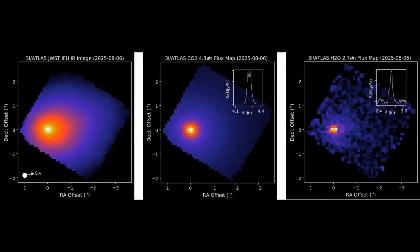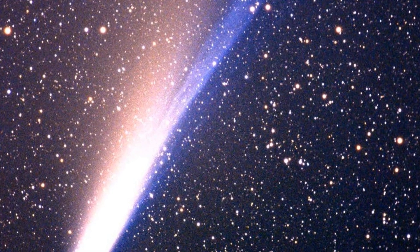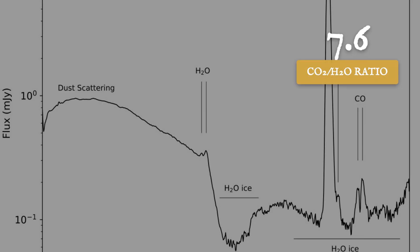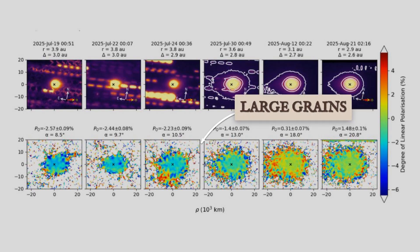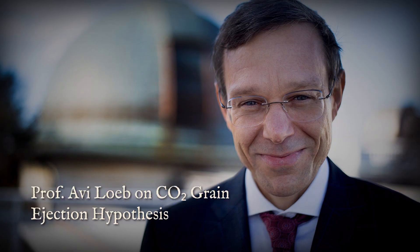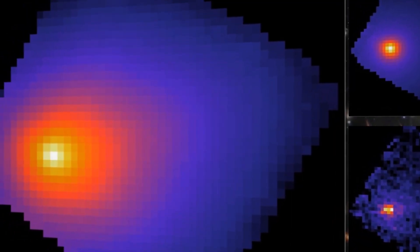In July 2025, telescopes captured 3i/Atlas's anti-tail pointing toward the sun, a rare sight for any comet, and unprecedented for an interstellar visitor. By September, that tail had flipped in step with Earth's crossing of the comet's dust plane. Spectra revealed a carbon dioxide to water ratio of about 7.6, while polarimetry suggested unusually large dust grains. Avi Loeb's model linked these features to carbon dioxide-driven grain ejection, predicting measurable signals in the infrared and millimeter ranges.